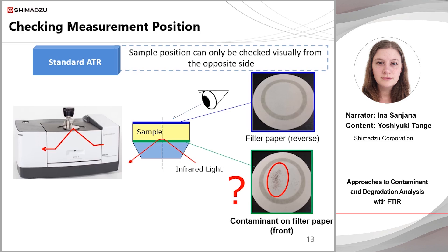There are cases where we want to measure contaminants on the surface of a sample. For a typical ATR attachment, the measurement surface is placed facing downwards and the position is checked by eye. However, it is difficult to see whether the contaminant or discolouration to be measured is in the correct position, because only the reverse side of the sample can be seen. The operator can take several different spectra with the sample in different positions, but there is no guarantee that a measurement will be taken in an optimum position.